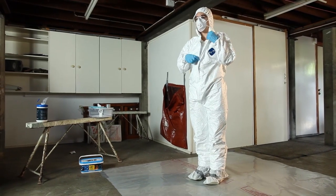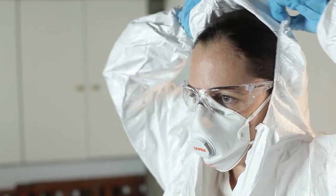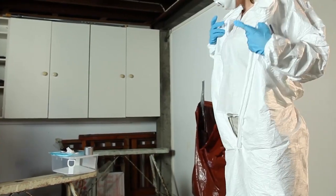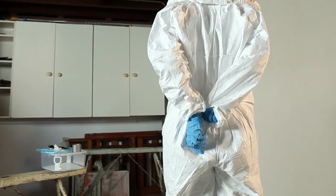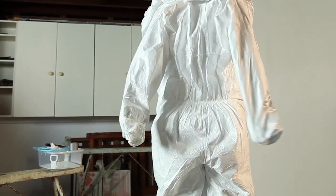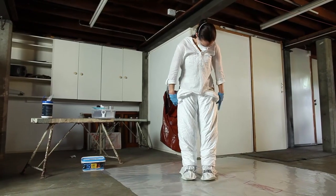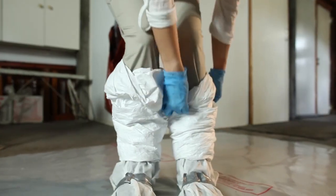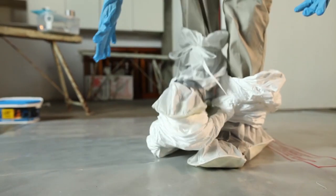Next, unzip your coveralls to the middle of your chest. Take your hood off by rolling it backwards on itself. Unzip the rest of the coveralls. Remove your arms by keeping them straight behind your back and pulling your arms out of the sleeves. Gather the sleeves and continue to remove the coveralls by rolling them inside out until they are around your ankles.